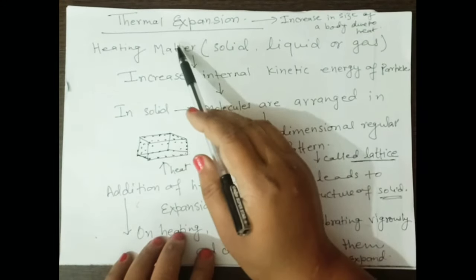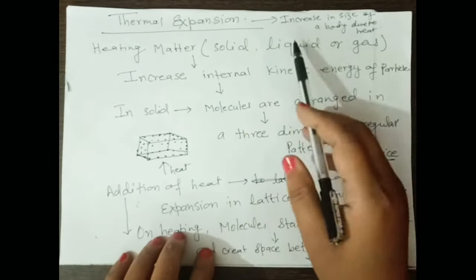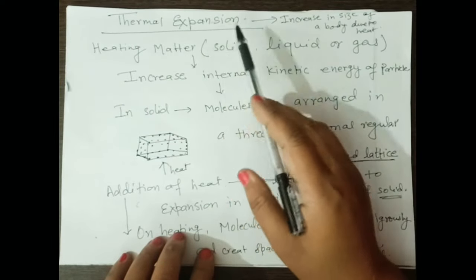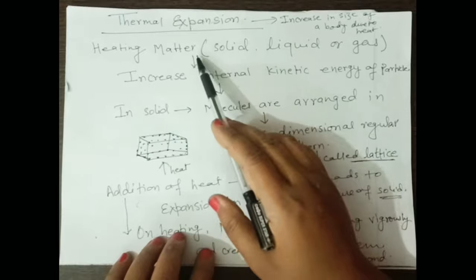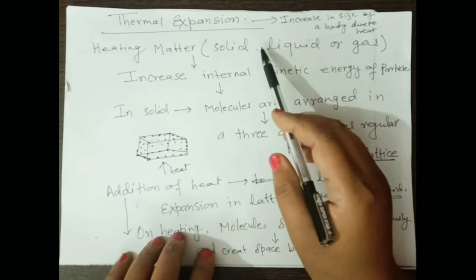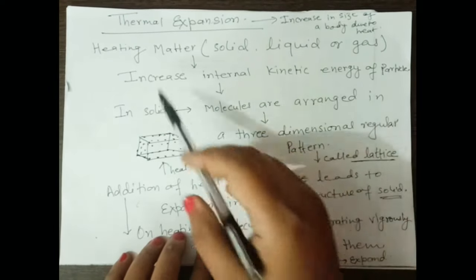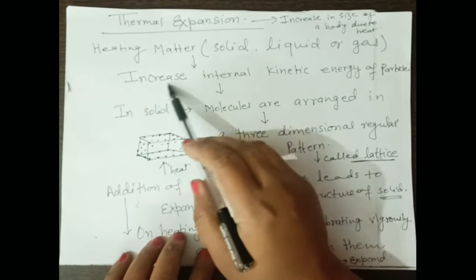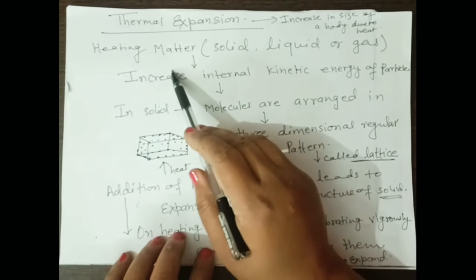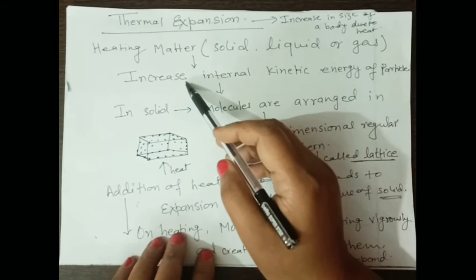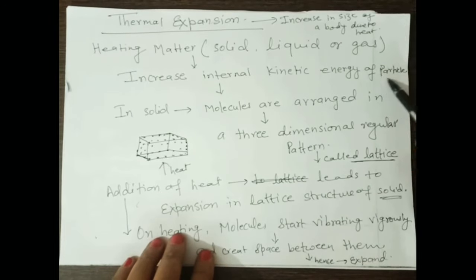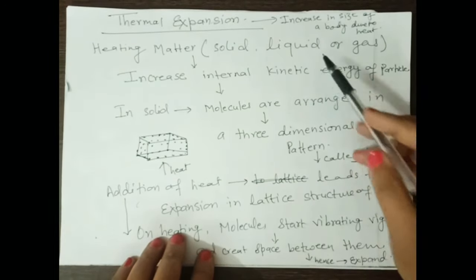Matter — meaning solid, liquid, or gas — is made up of tiny particles called molecules. When matter is heated, there is an increase in the internal energy of the molecules, and the kinetic energy of the molecules increases on heating.